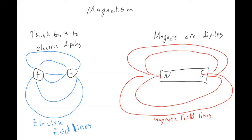As an aside — with electric charge and electric fields, we were allowed to have just a single electric charge, and it had field lines that radiated inward or outward based on its charge. Magnets don't have that. A single charge is called a monopole; if you have two charges, it's a dipole. Magnets have to have dipoles. If you discover a magnetic monopole, then you win a Nobel Prize.